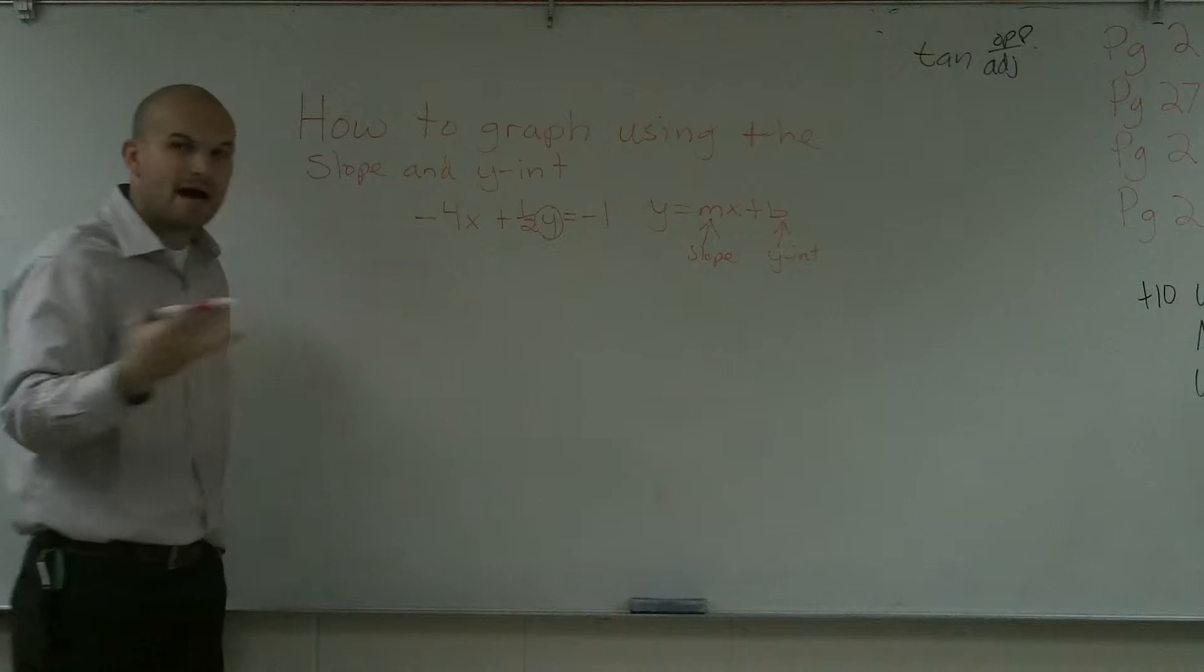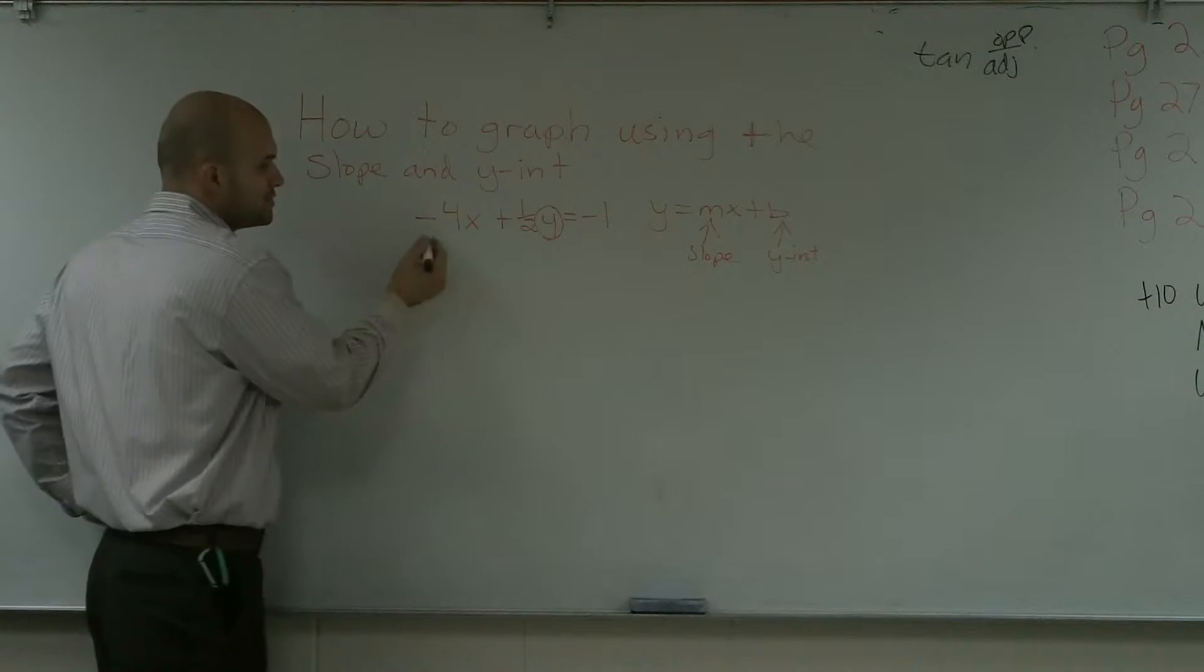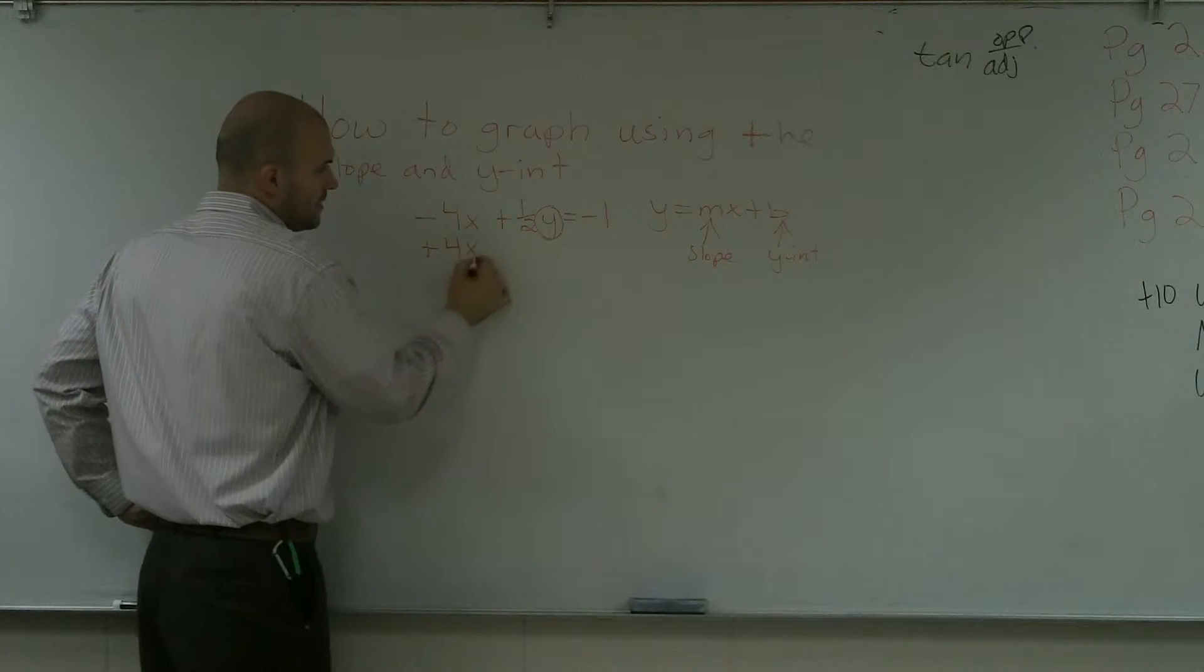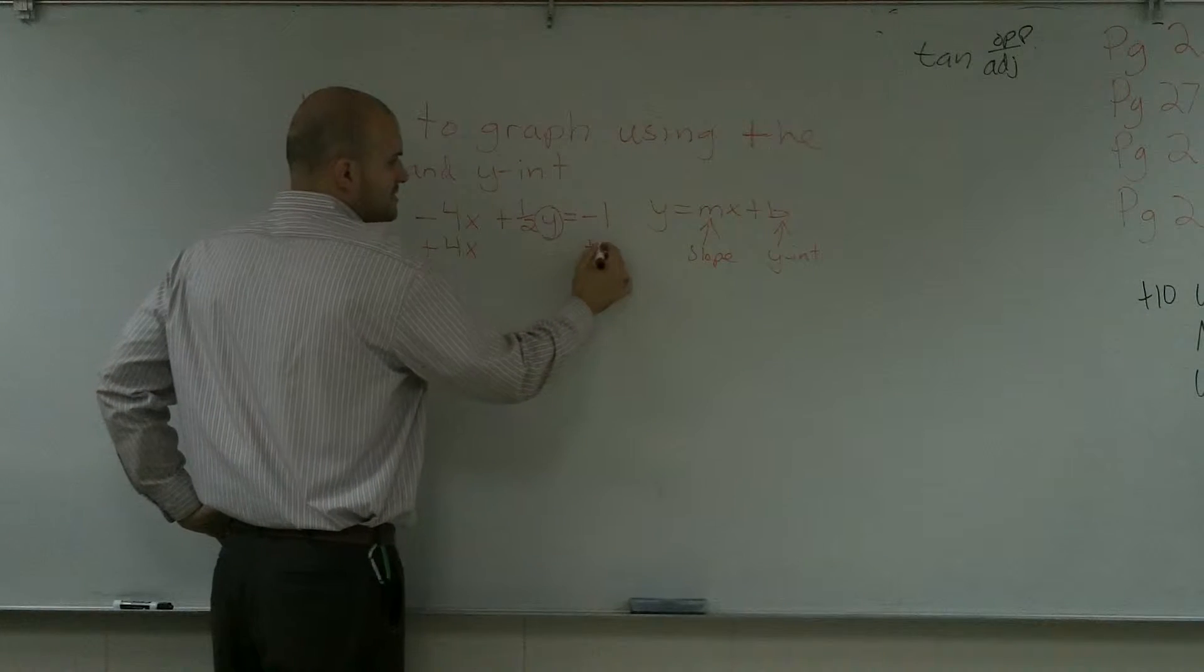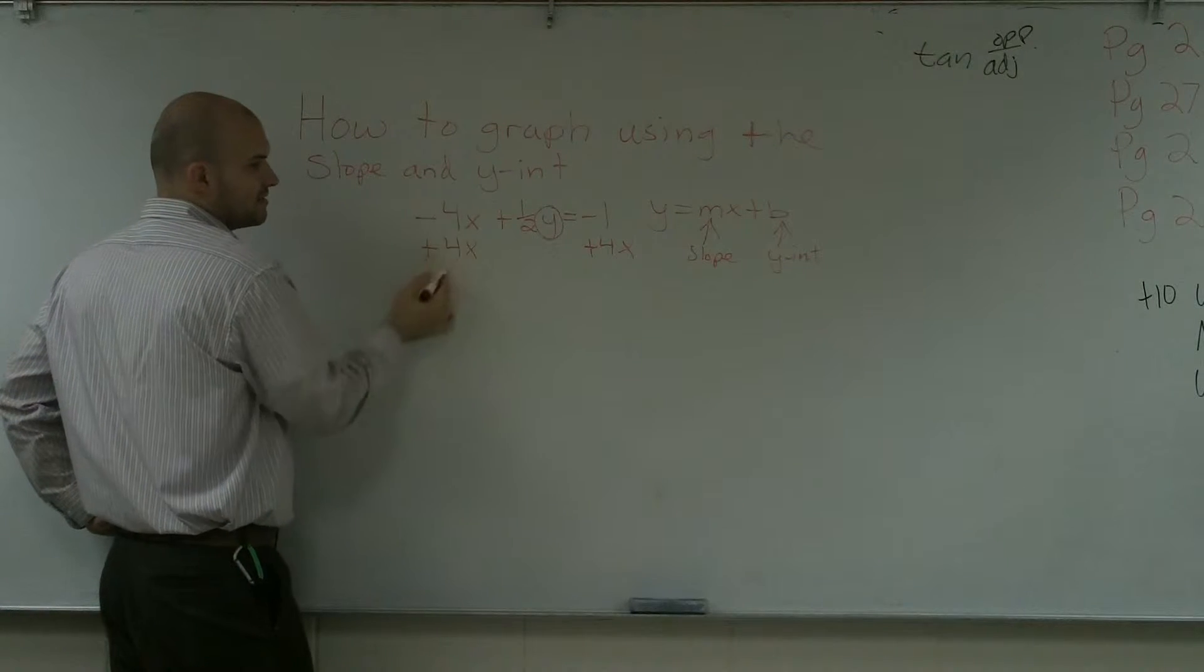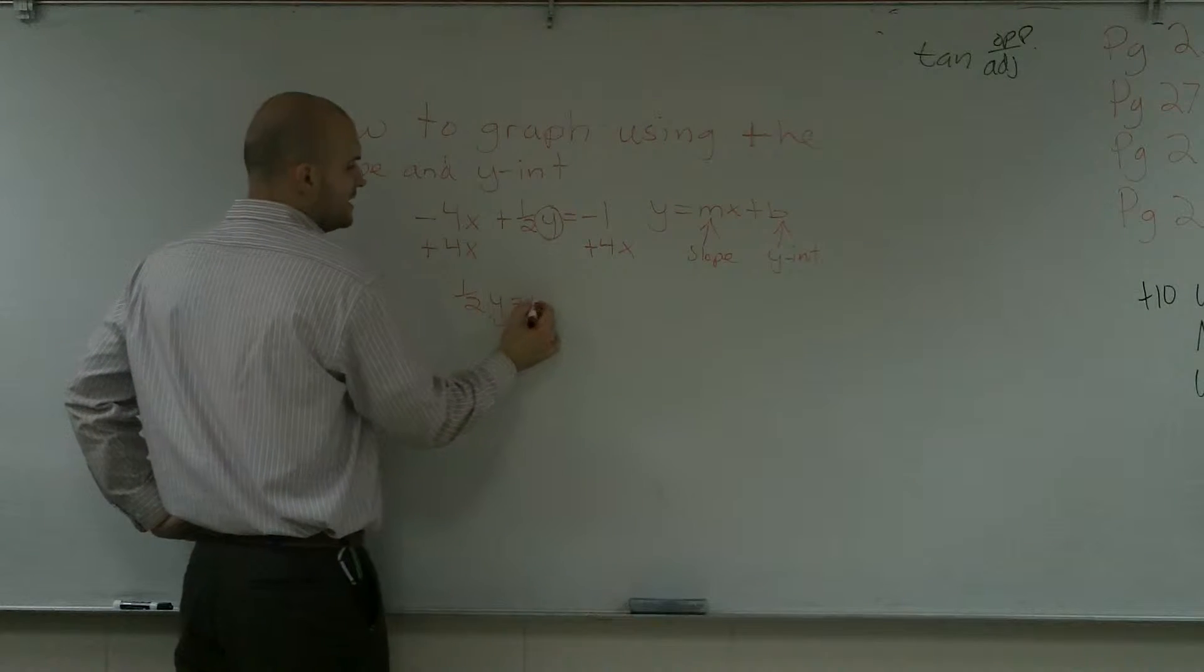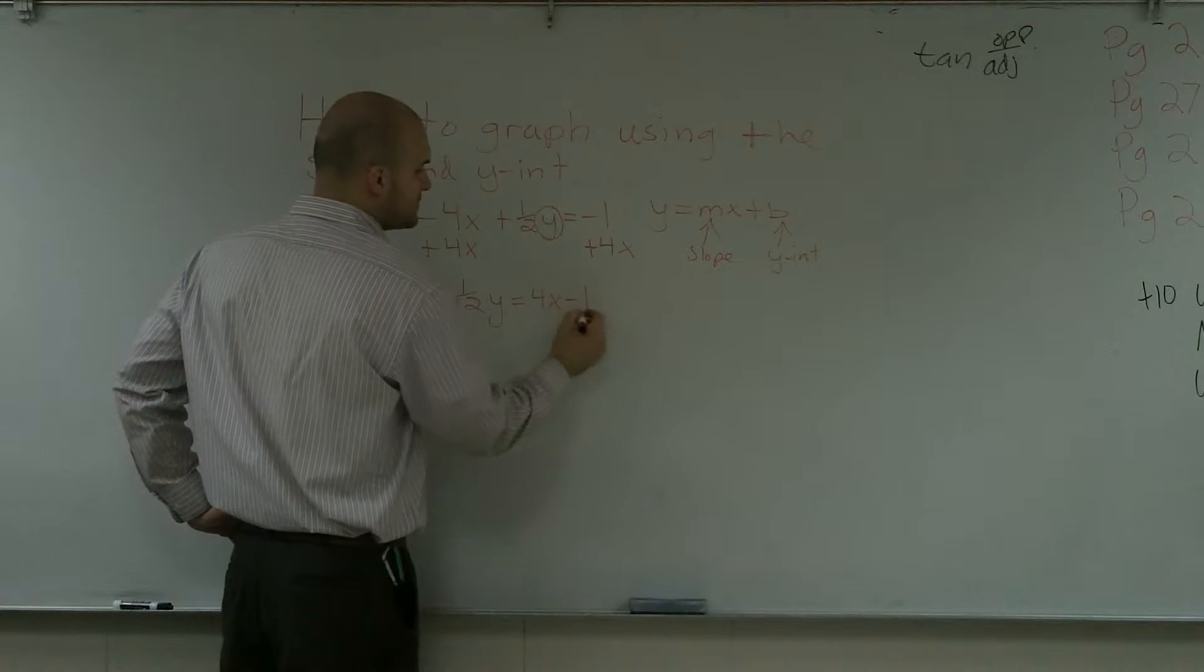So to undo my operations, I just have to undo the property. To undo addition of a negative 4x, I'm going to add a 4x, add a positive 4x on both sides. That is my addition property of equality. Those are going to become a zero, which I do not have to write. So I have 1 half y equals 4x minus 1.